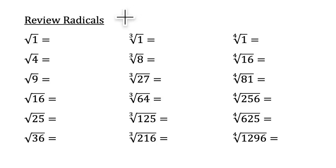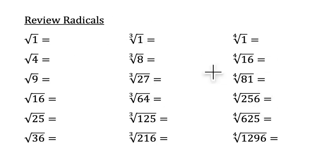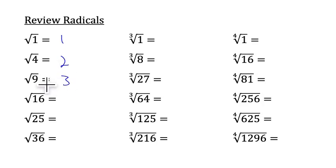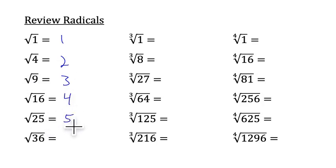Before we really get rolling, let's review our perfect square roots, perfect cube roots, and perfect fourth roots. With square roots, we're just wondering which number multiplied by itself equals the number inside the radical. So 5 times 5 is 25, so the square root of 25 equals 5.